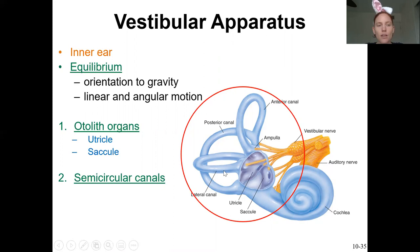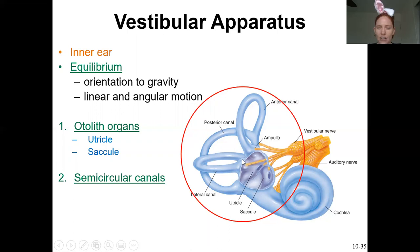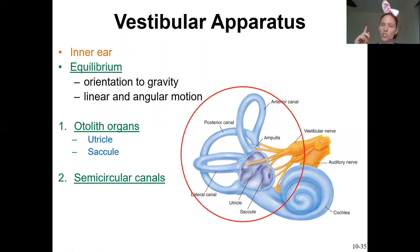Within the vestibular apparatus, you have two functional regions. The first is the semicircular canals — those half circles. These semicircular canals are oriented in three different planes: the anterior canal going in the front, the posterior canal going towards the back, and the lateral canal at an angle. This allows you to monitor rotational acceleration in multiple different planes.